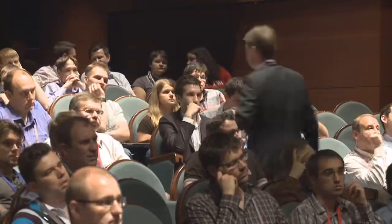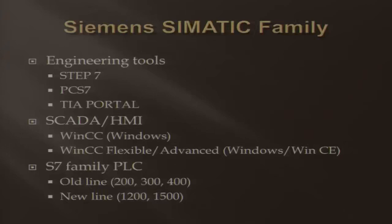I'd like to tell you about the main Siemens products, which are PLC and SCADA systems. Siemens has the following software for engineering: STEP7, PCS7, and TIA Portal, where PLCs are programmed. PLCs are the 200, 300, and 400 series, and the family PSC. The main SCADA versions are WinCC for Windows 7, and WinCC Pro or CE — the two main SCADA products that Siemens sells.